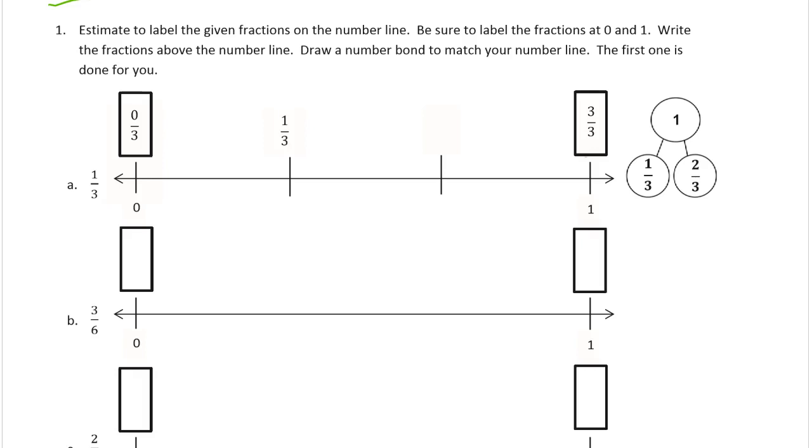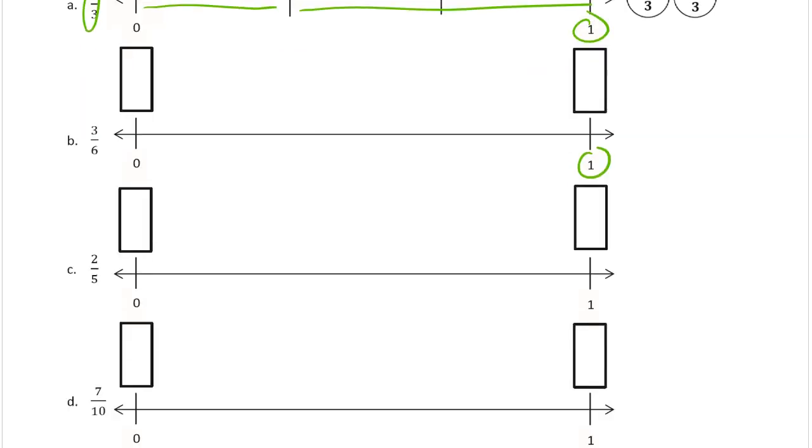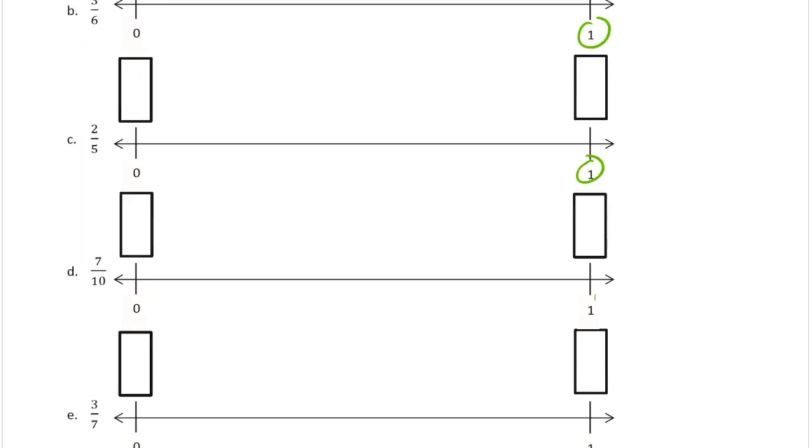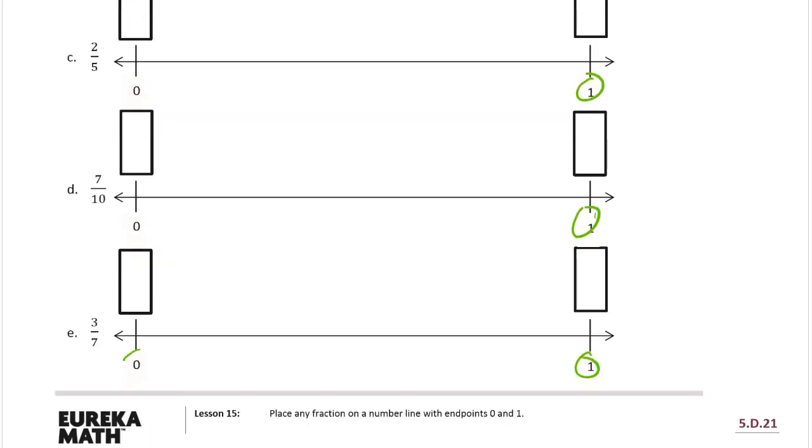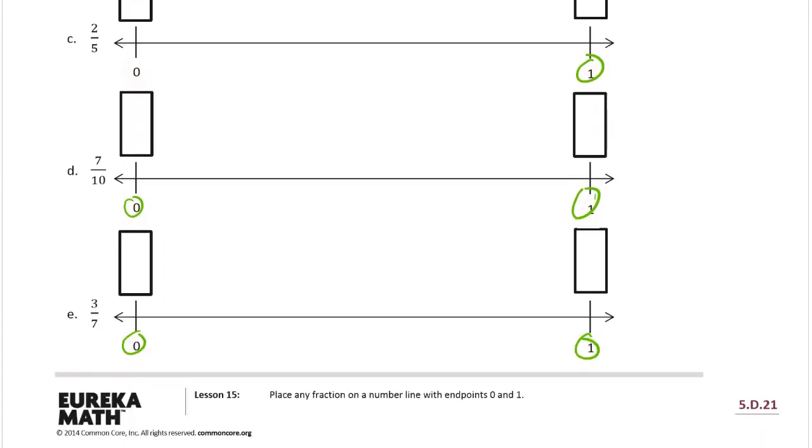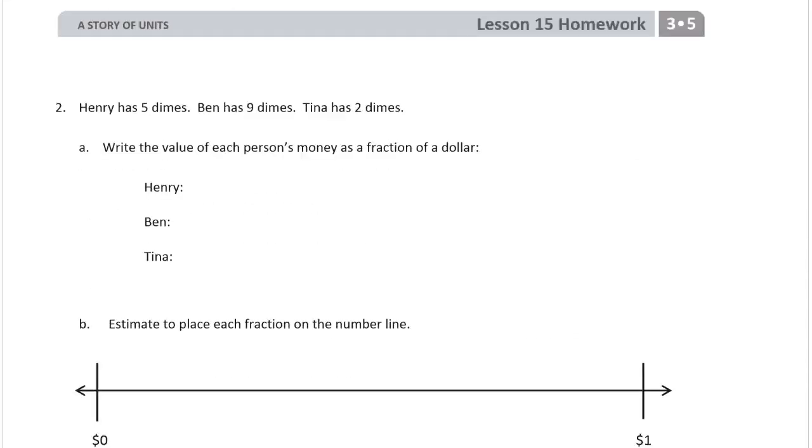Estimate to label the given fractions on the number line. Be sure to label the fractions at 0 and 1. Write the fractions above the number line. Draw a number bond to match your number line. The first one is done for you, so here 1/3 is what we had to do. We had to label 1/3 and then make the number bond to show 1/3 and then the rest, which is 2 more thirds equaling the whole. Notice that these are all going to 1 for a whole.